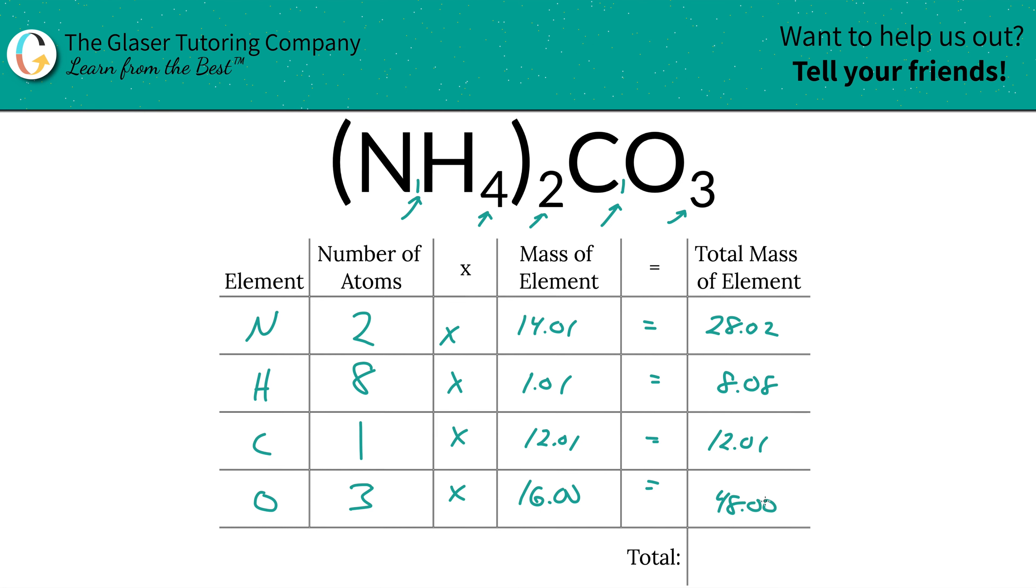And then to find the total mass of the entire compound, all you got to simply do is add this column up. So 96.11, that's the total mass, and the units here are grams per mole because we're finding molar mass.